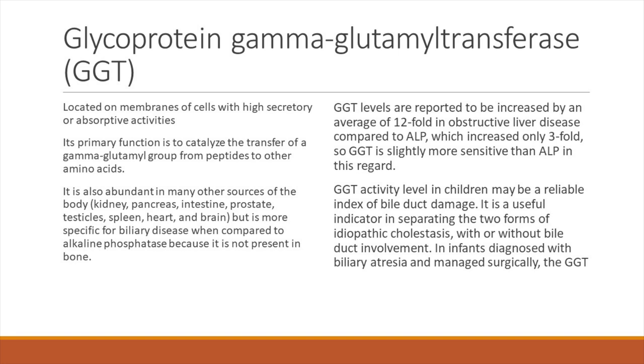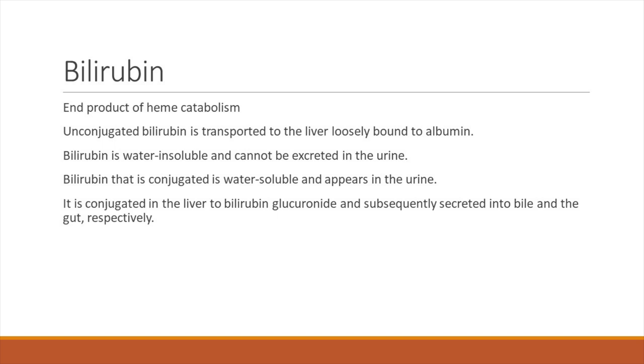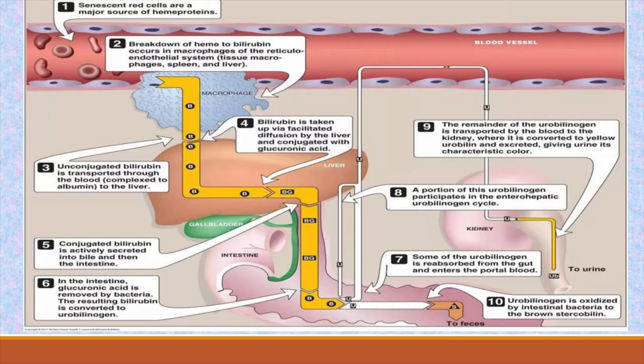Now coming to the next parameter which is bilirubin — it is the end product of heme catabolism. Unconjugated bilirubin is transported to the liver loosely bound to albumin. The hemoglobin is sequestered in your spleen, it is loosely bound to albumin in the blood, it goes to the liver where it is conjugated. From the liver it is excreted in the bile and it goes out from the small ducts to the large ducts to the extra-hepatic duct and into the intestine. From the intestine, some part goes back to the enterohepatic circulation; some part gets oxidized by intestinal bacteria which turns it brown into stercobilin and comes out in the stool; and some part is transported back to the blood, to the kidney, and is converted into yellow urobilin and excreted, giving urine its characteristic colour.